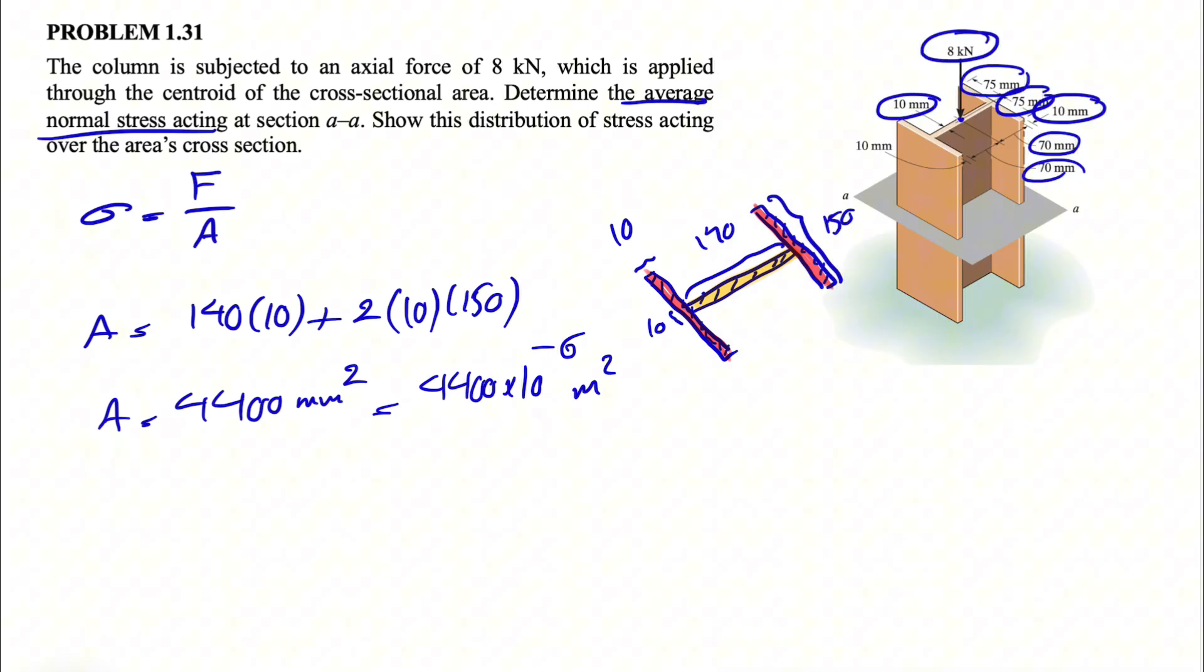So that's the area. And we also have the force F, our force F is 8 kilonewtons. So to find the average normal stress, we basically have the force 8 kilonewtons, so 8000 newtons, over the area. So 4400 times 10 to the minus 6, we can also write it as 4.4 times 10 to the minus 3.